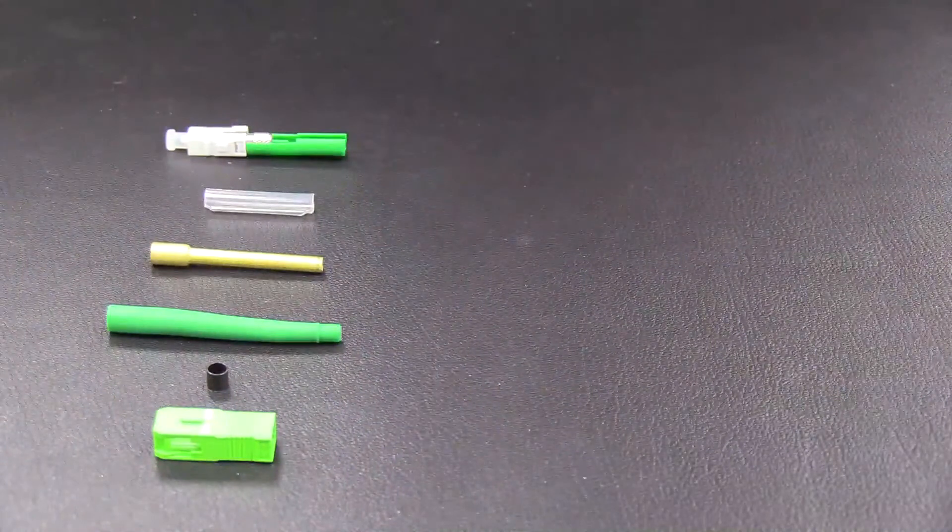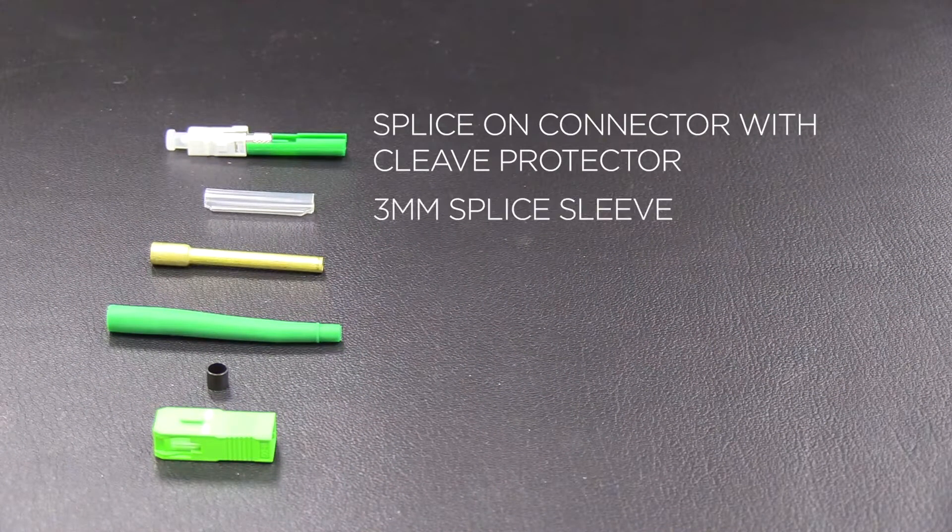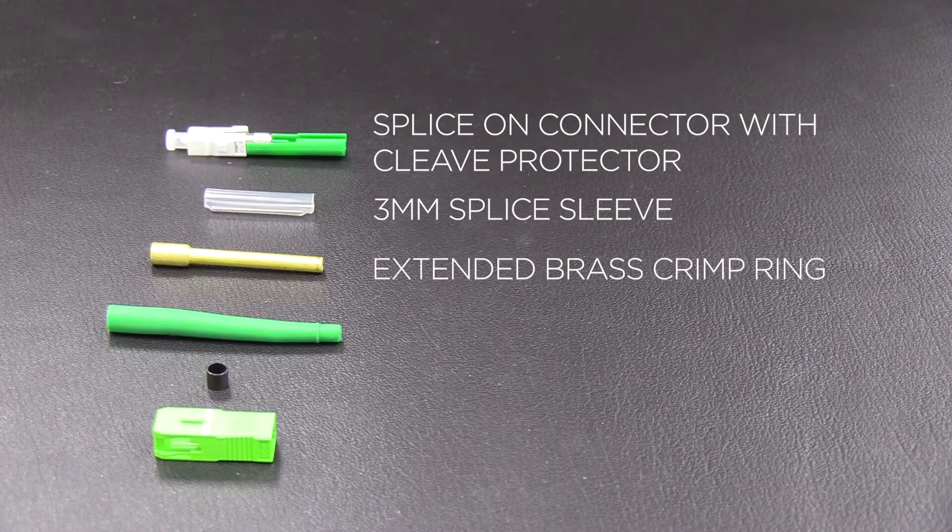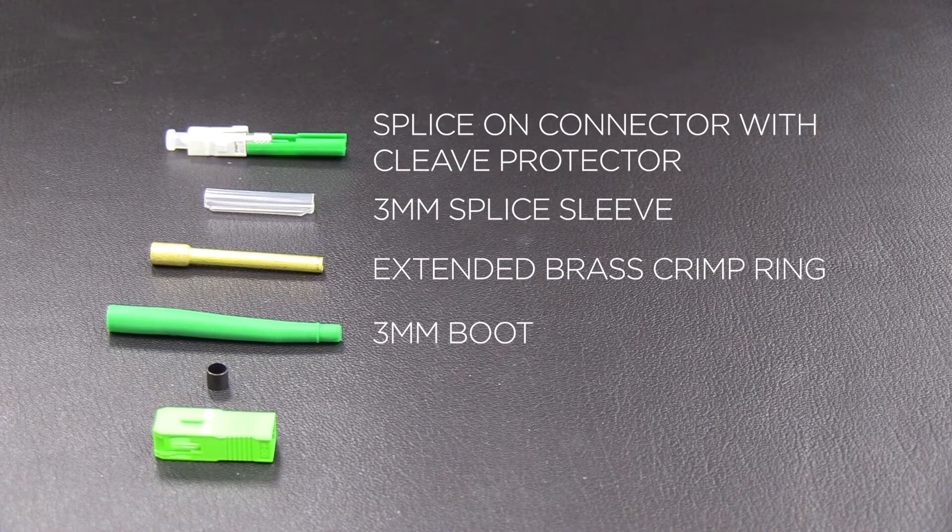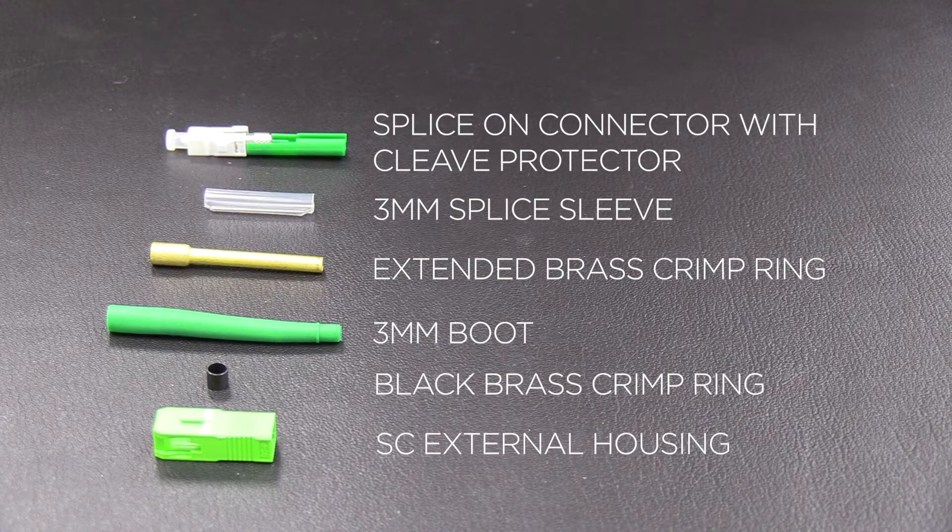In the pack there is the splice-on connector with cleave protector, 3mm splice sleeve, the extended brass crimp ring, 3mm boot, the black brass crimp ring, and the SC external housing.